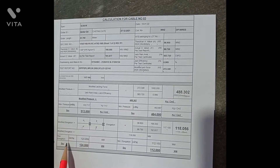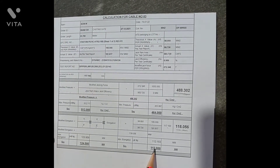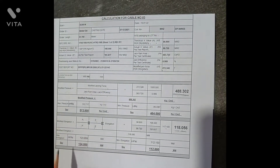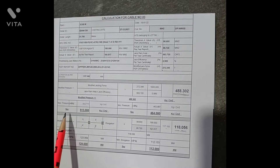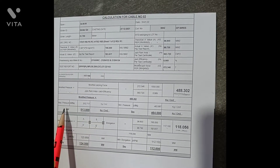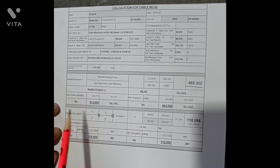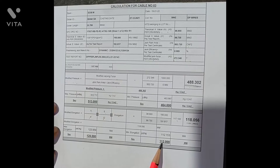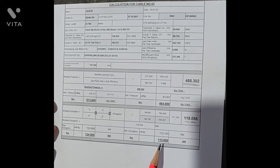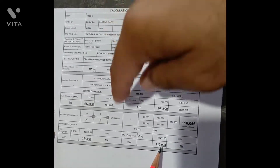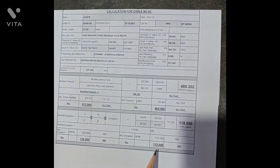We also give the elongation a tolerance limit of +5% and −5%. This is why we define the modified pressure with a maximum of +5%. At maximum pressure, we should achieve the minimum elongation.